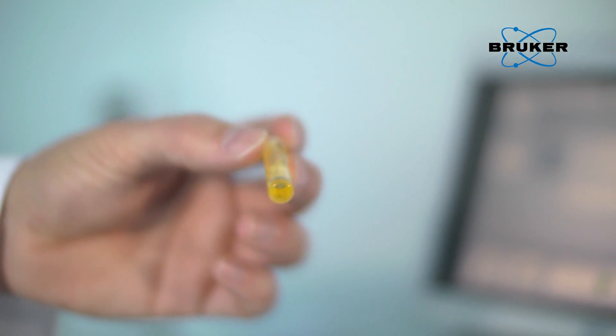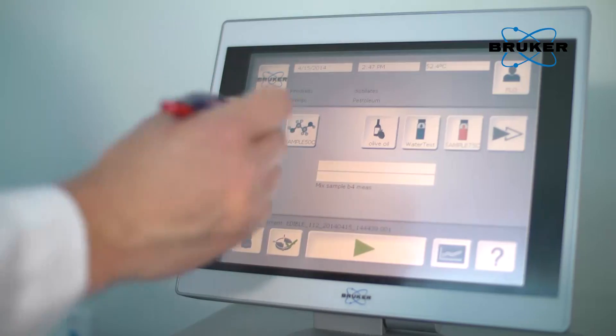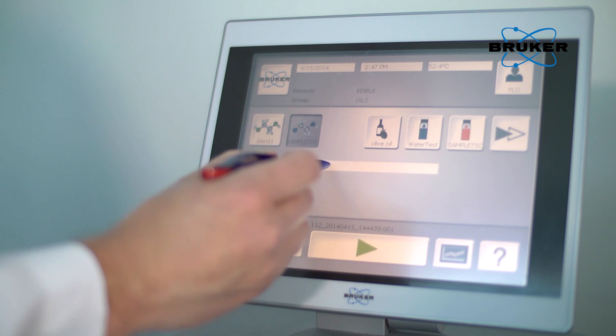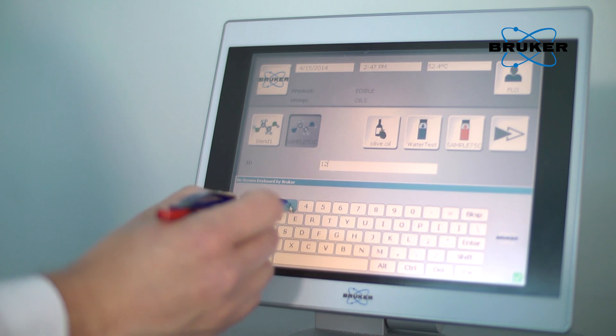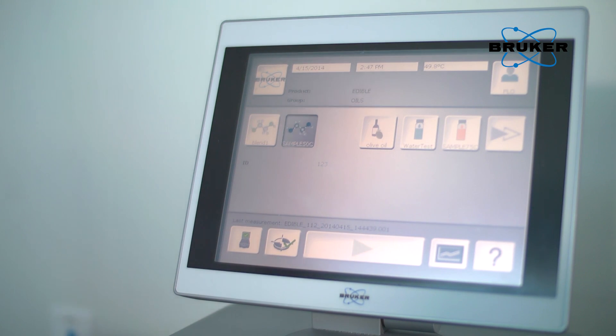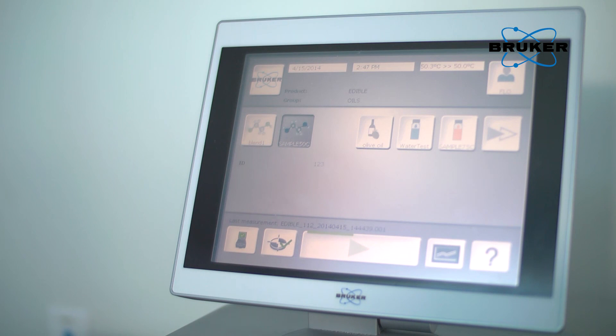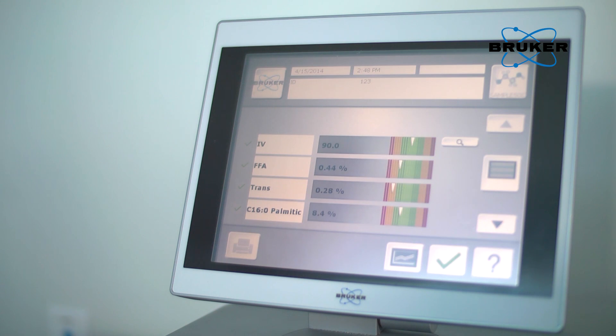The sample is simply filled into the measurement cup or sample vial and placed onto the spectrometer. The product is selected by either pressing on the respective product icon or by using a barcode reader. A simple touch on the screen starts the measurement. The progress is displayed through the green status bar. After approximately 15 to 30 seconds, the measurement is complete. The result view shows the quality of the analyzed product immediately.